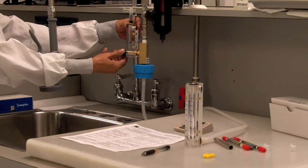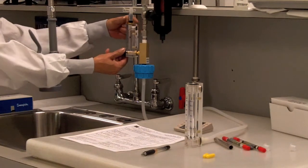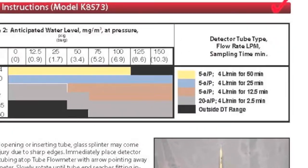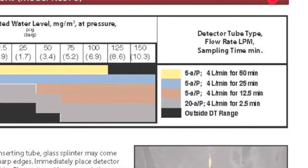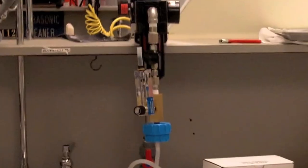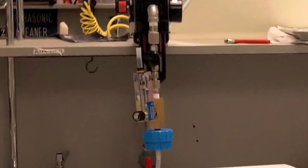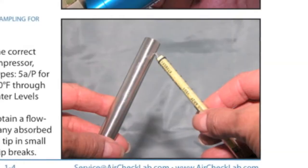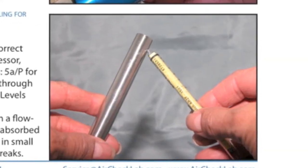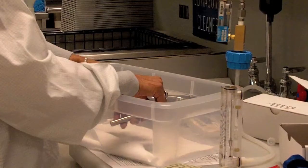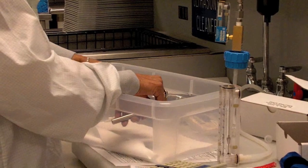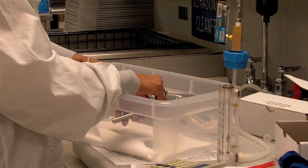Turn the tube flow meter needle valve counterclockwise and adjust for a reading of 4 liters per minute. Allow air to flow for 2 minutes before inserting the detector tube. Be prepared to break the tips of the detector tube in a safe manner, such as over a trash can, to catch the broken glass tips.